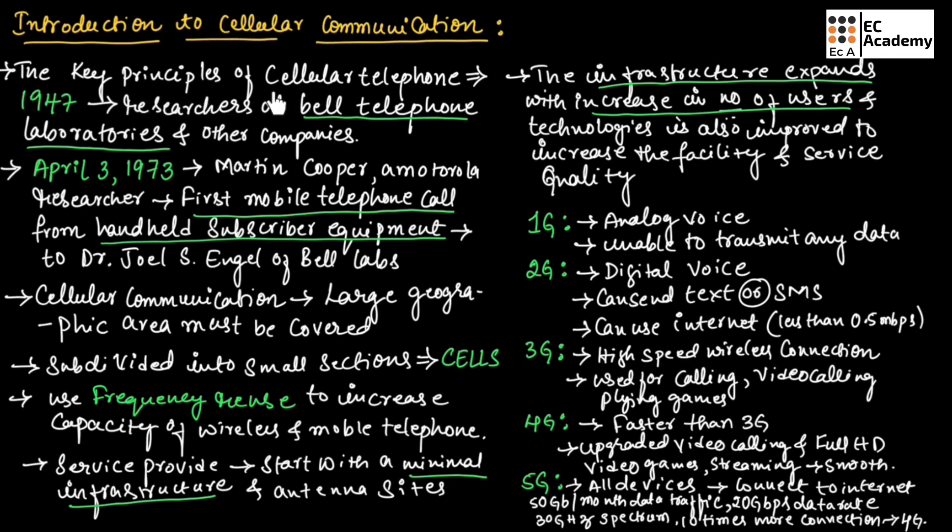The key principles of cellular telephone were provided in the year 1947 by the researchers at Bell Telephone Laboratories and other telecom companies throughout the world.